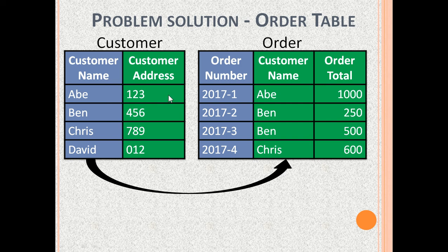Every customer's address exists in a single place and can be updated there. CustomerName in the CustomerTable is the primary key. CustomerName in the order table is called the foreign key, which means it is the primary key of some other table.